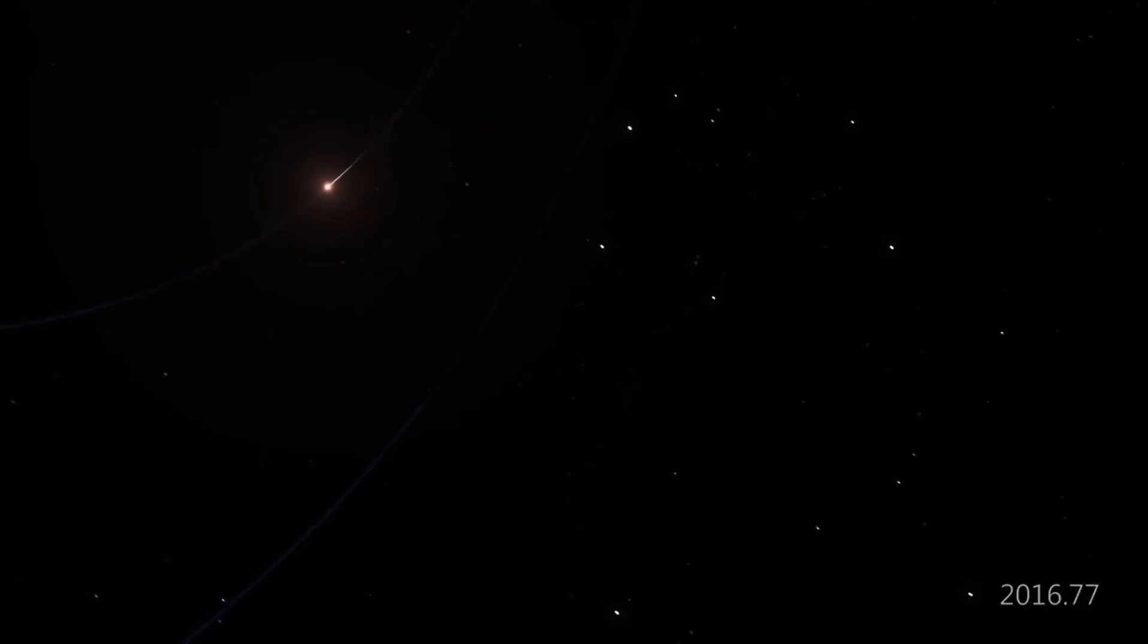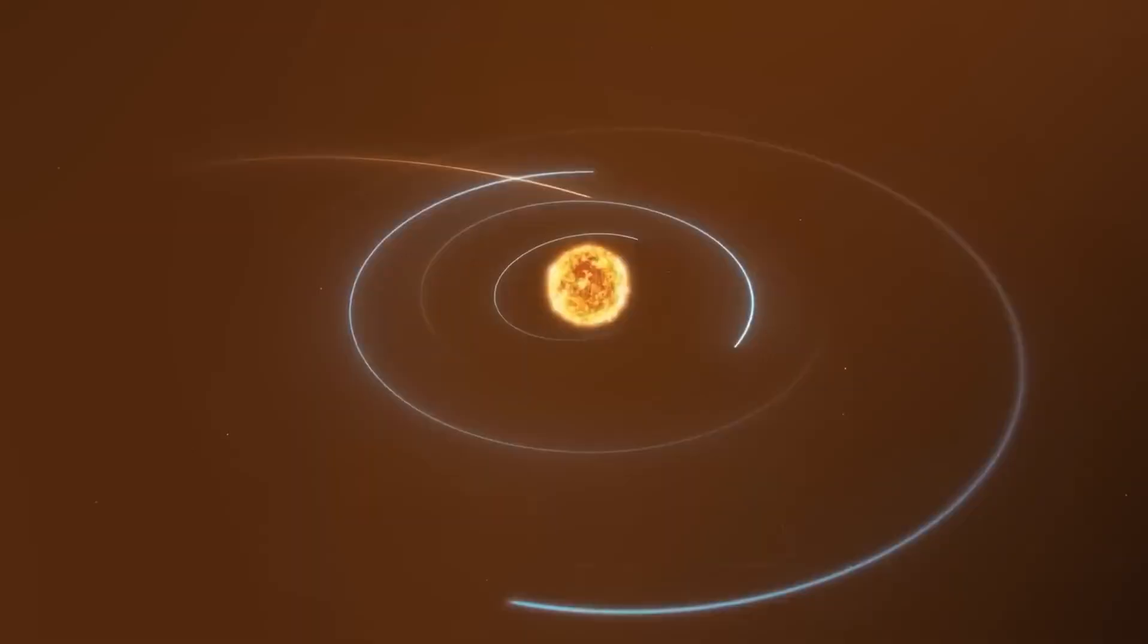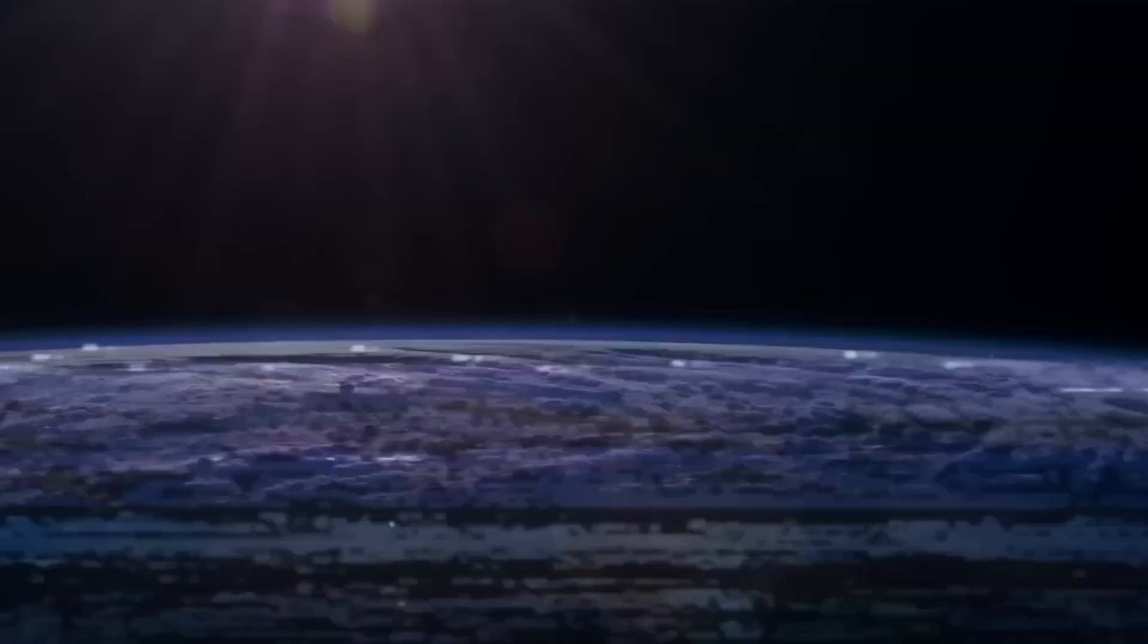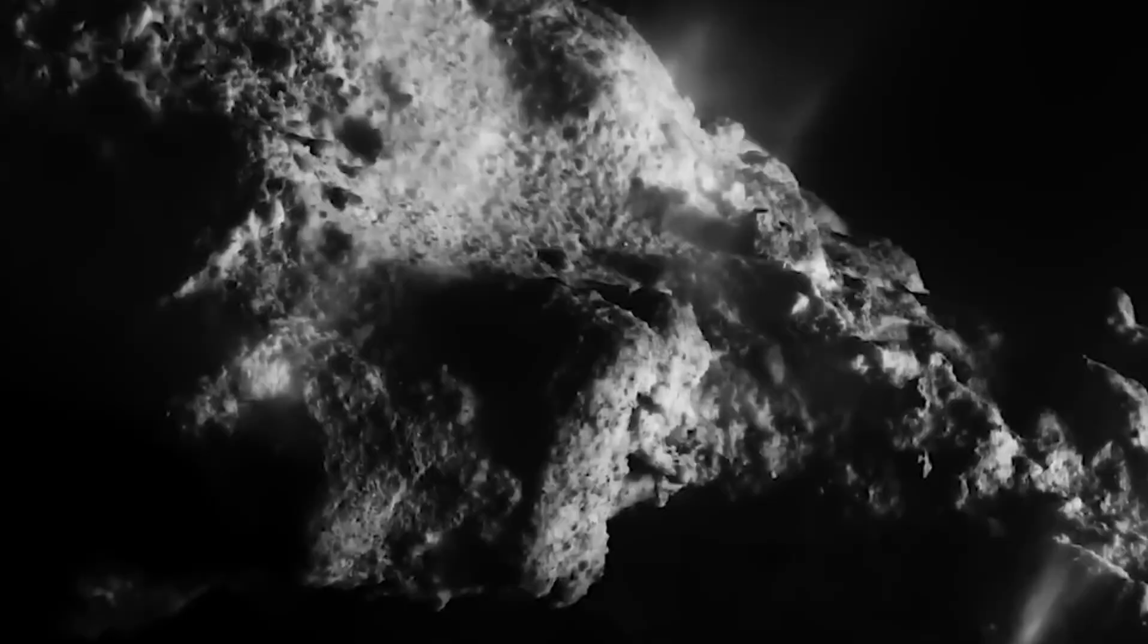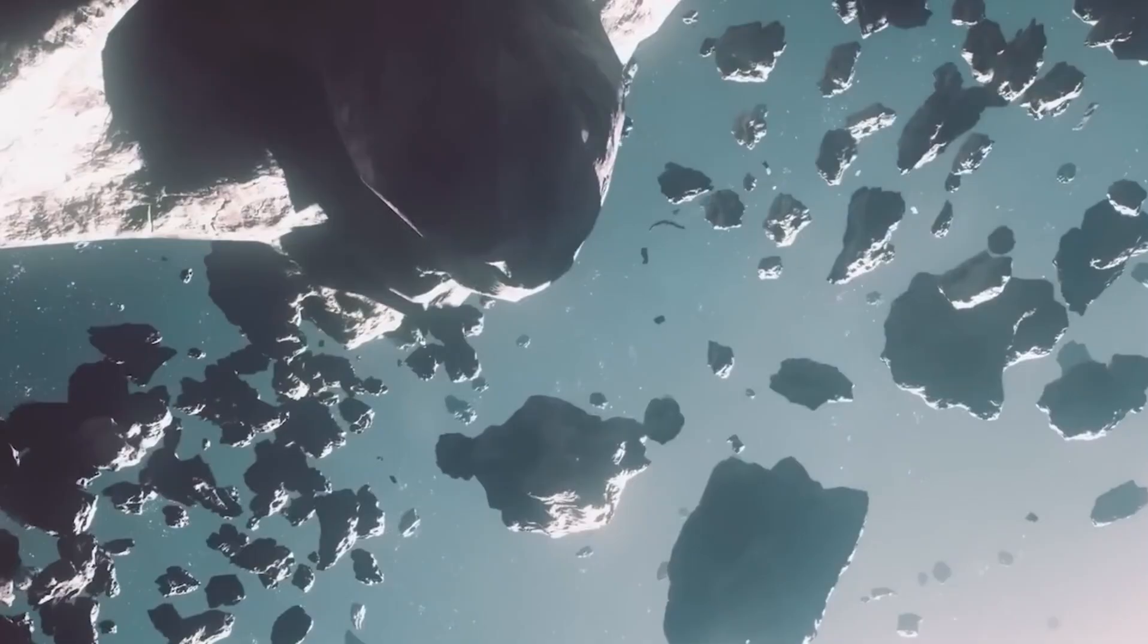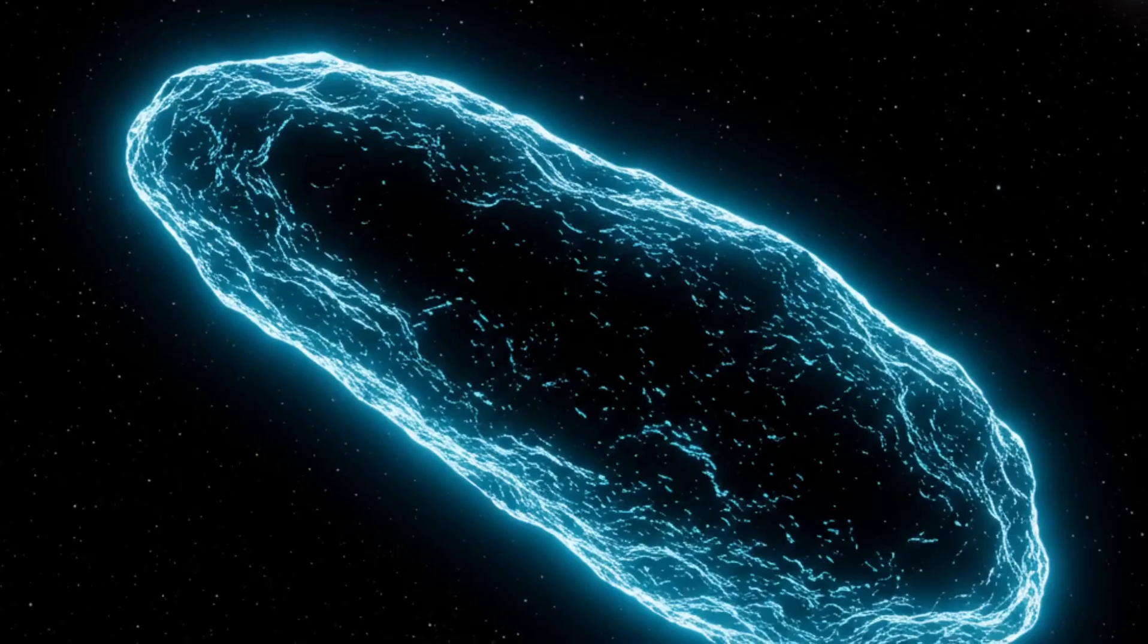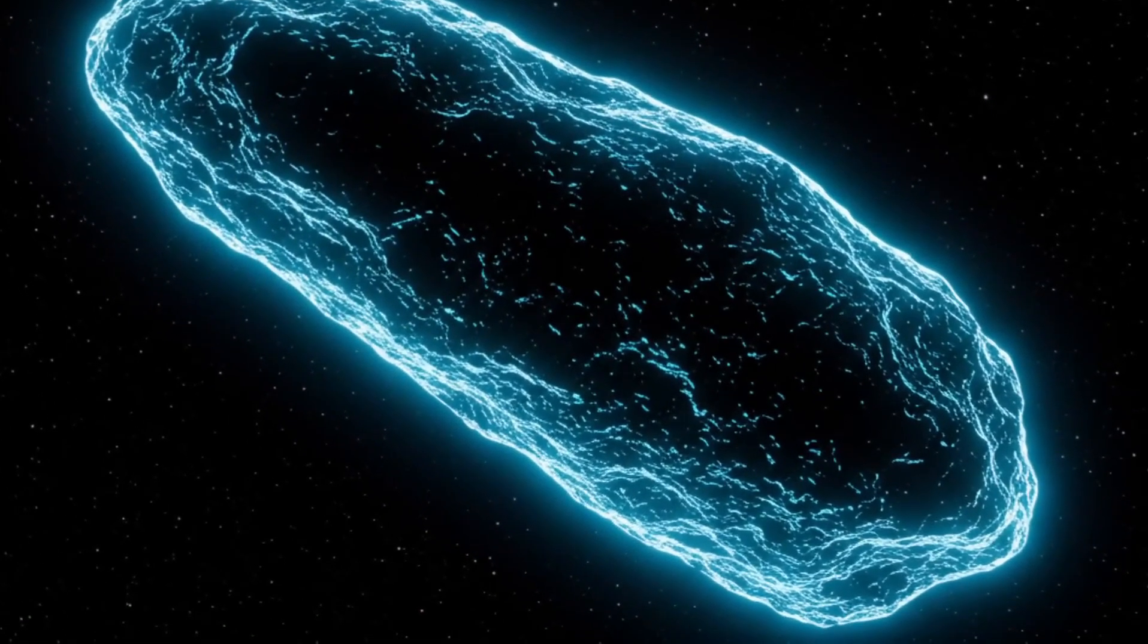What makes 3 Atlas even more unsettling is its timing. Its closest pass to the Sun, its perihelion, will occur when Earth is on the opposite side of our star. For several weeks in late October 2025, it will vanish completely from our sight, hidden in the Sun's glare. No telescopes, no radar, no tracking. In space terms, that's the perfect window for something under intelligent control to make a move.